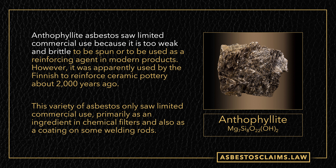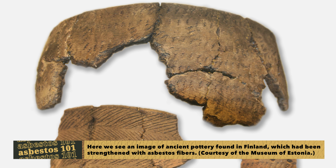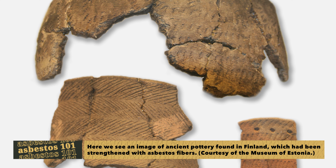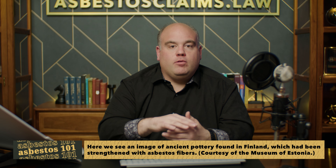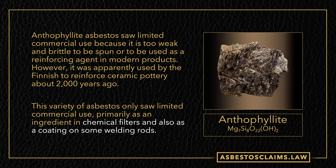Next, we have anthophyllite asbestos. Very limited commercial use — very weak, very brittle — but it did occur in pretty abundant quantities in Finland. Archaeologists have found ancient pottery a couple thousand years old that the Finns reinforced with anthophyllite. They would take the fibers and mix them in with their mud, and when they were done with the pot, it would be stronger. Anthophyllite was also used as a coating on some welding rods and a few other uses. But if people were exposed to working with asbestos, it was probably chrysotile, crocidolite, or amosite.